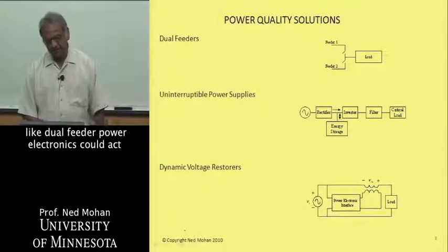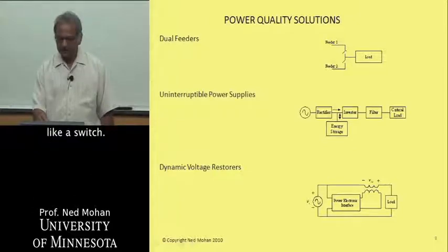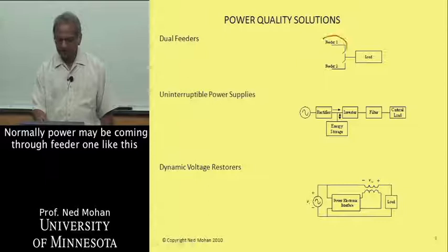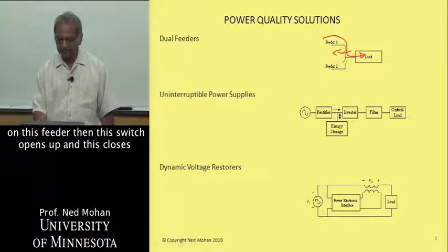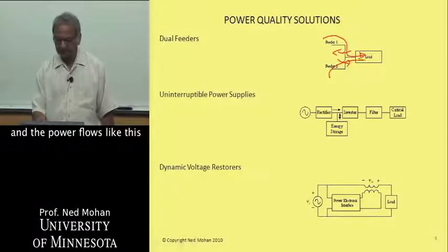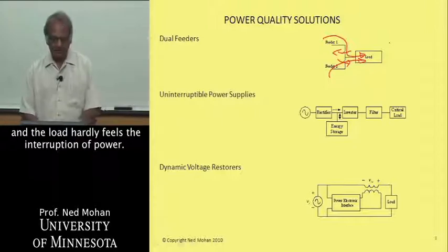There are other applications like dual feeders, where power electronics act like a switch. Normally power comes through feeder one, but if there's a disturbance on this feeder, the switch opens and another closes, redirecting power flow so the load hardly feels any interruption.